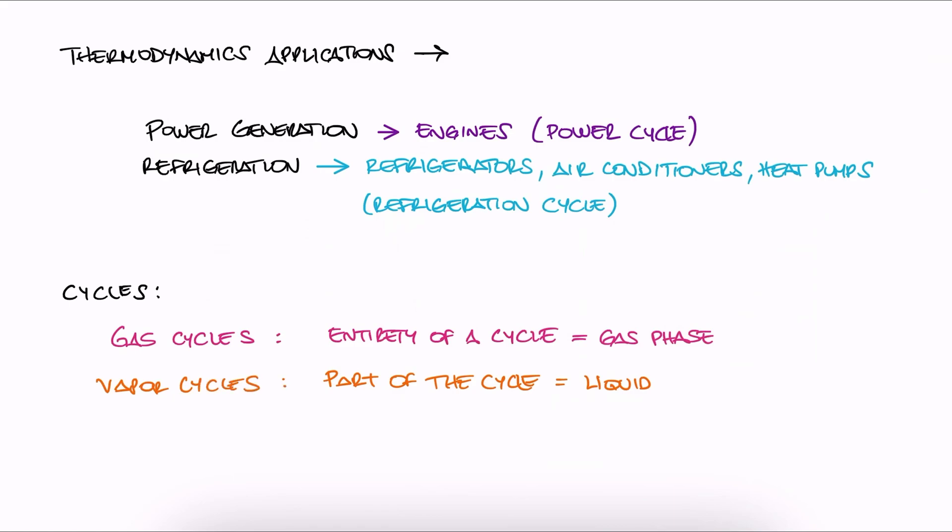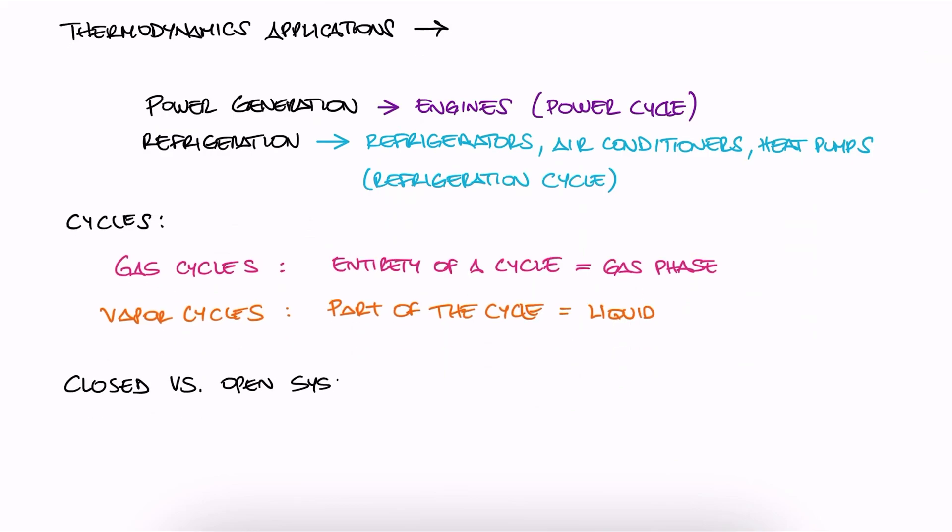Remember what we defined toward the beginning of this course: closed cycles are those where the working fluid returns to its initial state at the end of the cycle and is recirculated. In open cycles, the working fluid is renewed at the end of each cycle. We'll begin with gas power cycles.